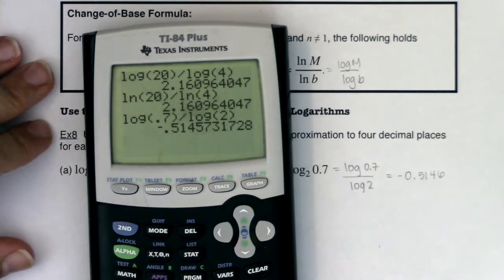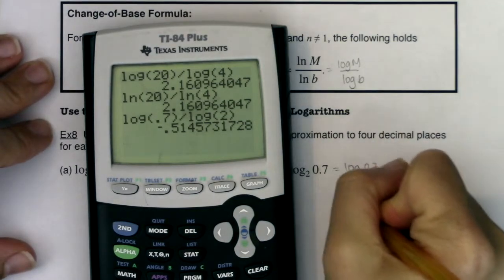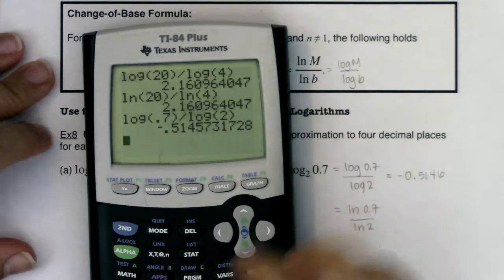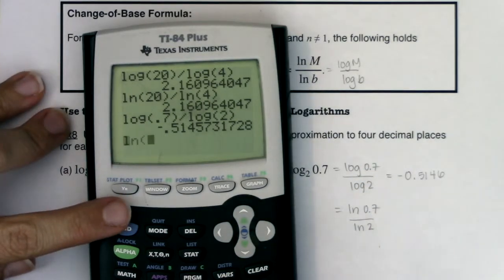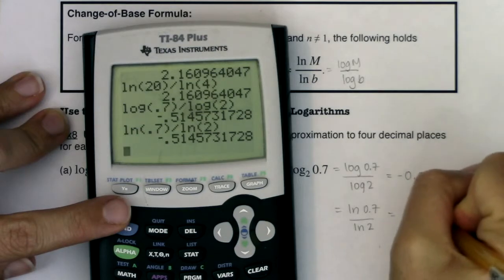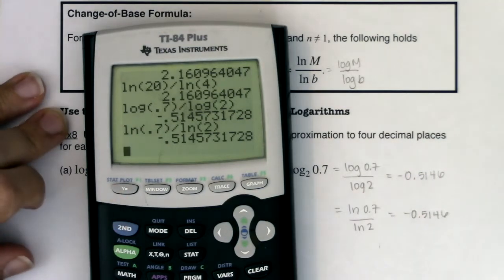So going along with this, I could also have written this if I wanted to as ln of 0.7 over ln of 2, and let's just check that. ln 0.7 divided by ln of 2, and we are getting negative 0.5146.